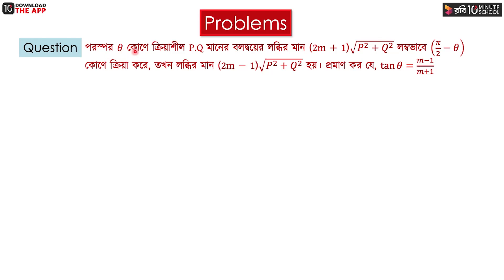What is theta minus theta? And what is pi by 2 minus theta? The fact that p is equal to q. If theta is equal to 2m plus 1 root of p squared plus q, and if pi by 2 minus theta, then p and q is equal to 2m minus 1 root of p squared plus q squared. So tan theta is equal to m minus 1 divided by m plus 1.